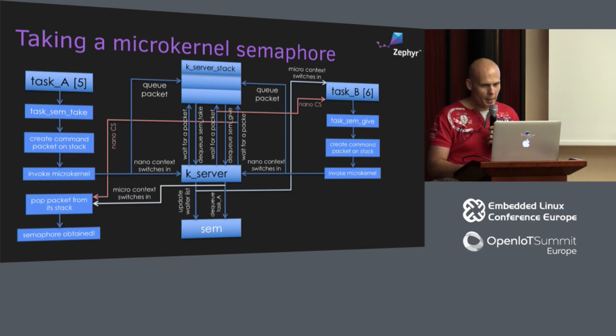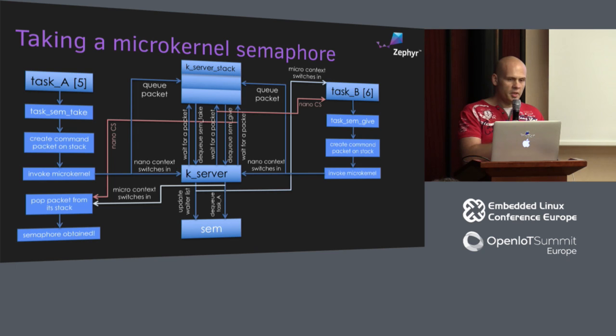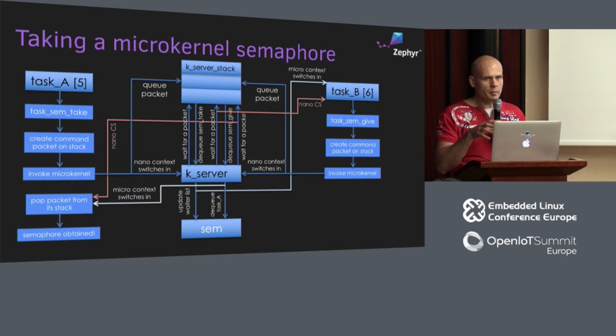That might seem complicated, but you have to think about what I was saying about VSP earlier — a packet could have been pushed by another CPU, giving you an inter-CPU communication mechanism. Even if you're operating on a microkernel semaphore and the semaphore is free, there's still going to be a context switch into the microkernel server fiber and a context switch back to the task that receives the semaphore.